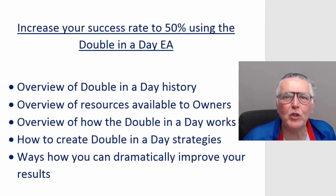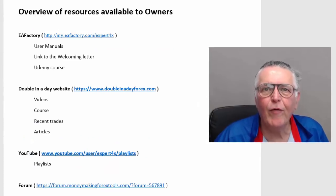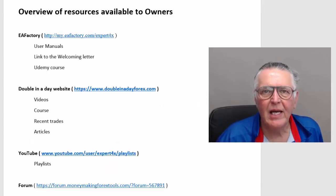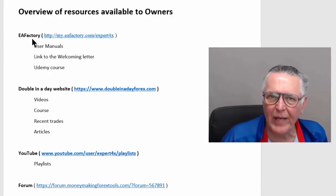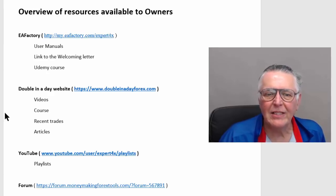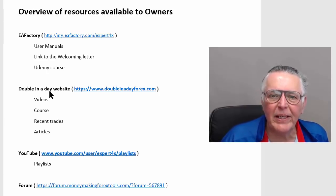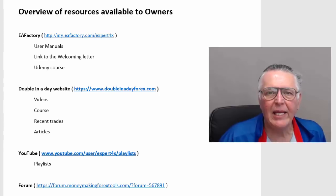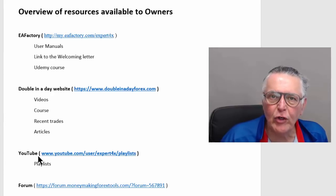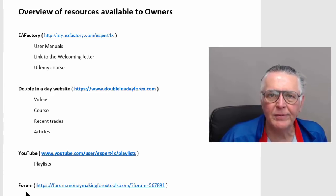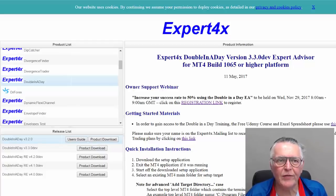Now let's look at the resources available to owners of this EA. There are four main sources: the EA Factory website, the Double in a Day website, the YouTube channel, and the forums. We'll go through all of those one by one.